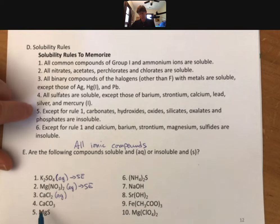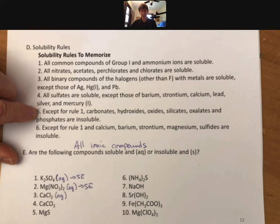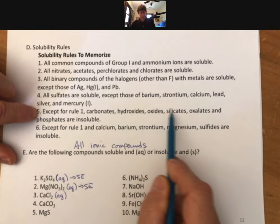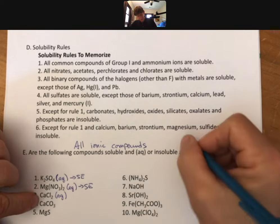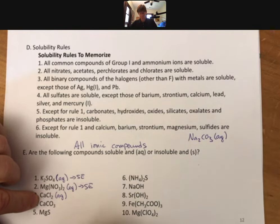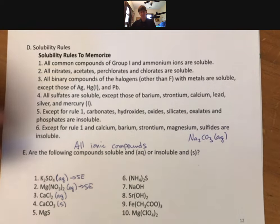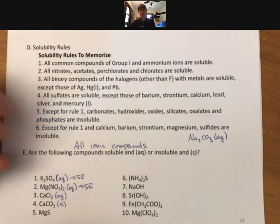Now we have calcium and carbonate, and you have to go all the way down to rule number five, which says except for rule number one, and rule number one says that all group one and ammoniums are soluble. So except for group one and ammonium, carbonates, hydroxides, oxides, silicates, oxalates, and phosphates are insoluble. So sodium carbonate would be aqueous and soluble because it's in group one. Calcium carbonate would be a solid, and calcium carbonate, by the way, is approximately 95 to 99%, I think 99% actually, of eggshells, and eggshells are not soluble in water. Good for the chickens.